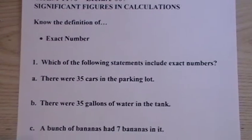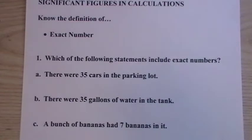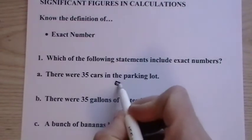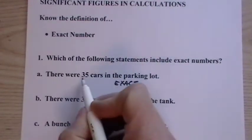There are 35 cars in the parking lot. You went out, you counted them. Since it was counting, 35 is an exact number.